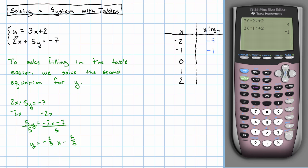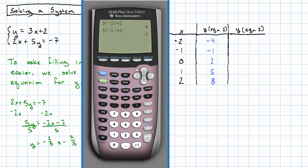because my slope is 3. So I'll have 2, 5, and 8. For my second equation, I'll have negative 2 fifths times negative 2 minus 7 fifths. That's negative 0.6.